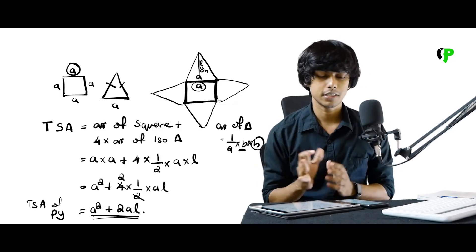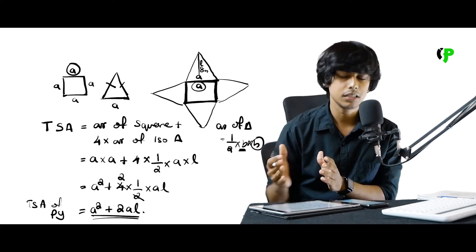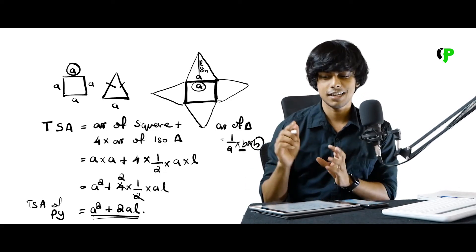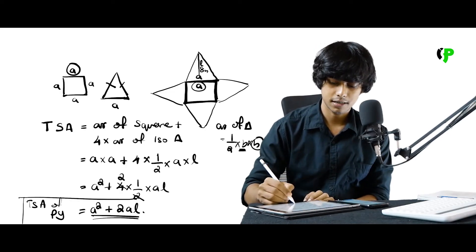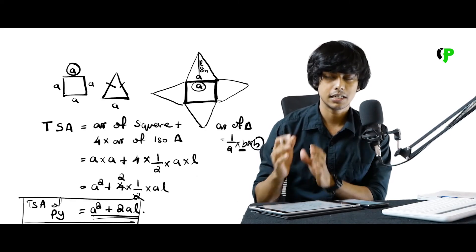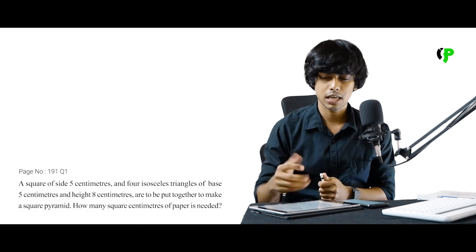We will solve using this formula. The side of the square is 5 cm, so A equals 5. The triangle has a base of 5 cm — the same as the side of the square. So the base of the triangle equals A, which is also 5.